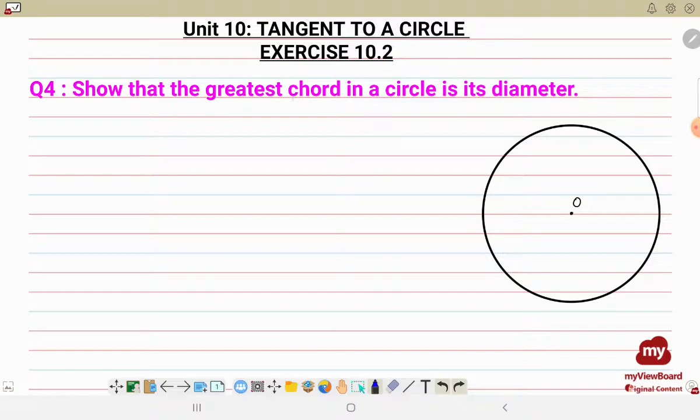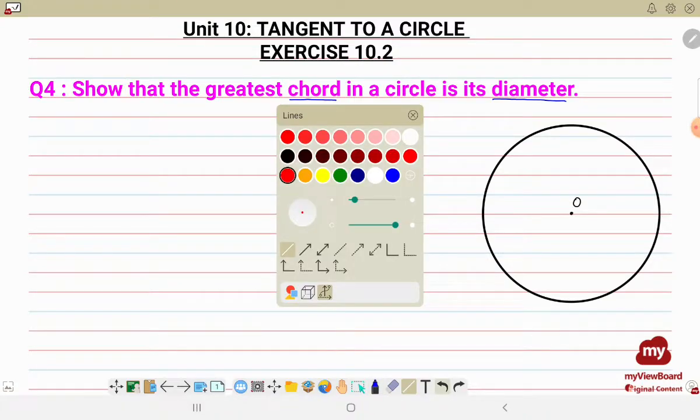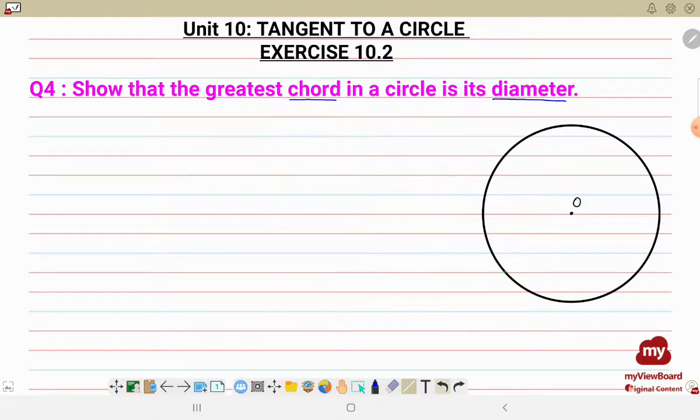So first we need to know what is the chord and what is the diameter. The chord is the line segment which touches the two points of a circle. So let me draw the chord first, let us draw with green color. So this is going to be the chord, it touches the two points of a circle.